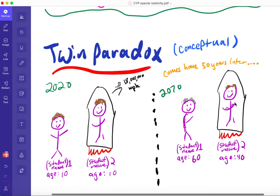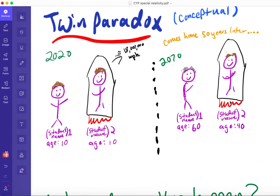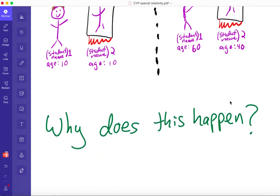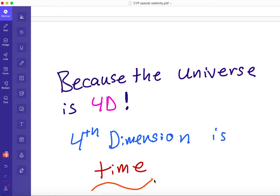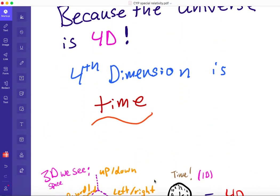So his watch, while he was traveling, was ticking slower than my watch on Earth. According to my watch, 50 years has passed, and according to his watch, only 30 years has passed. You can pause this video and think about why this might happen. The answer is that the universe is four-dimensional, and the fourth dimension is time. That's pretty weird. So what do we mean by dimension?